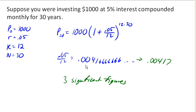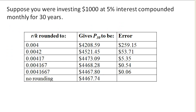here's a little table of values. If we rounded that to .004, it would give our answer as $4208.59, which is $259 off from the correct answer.